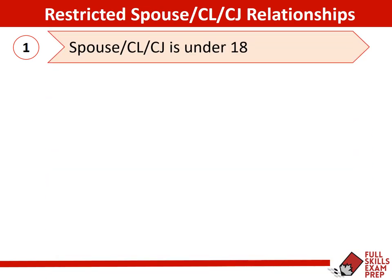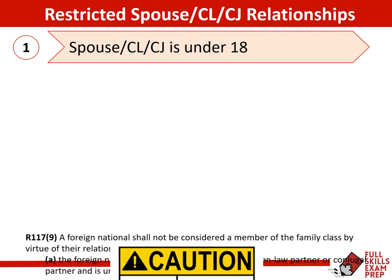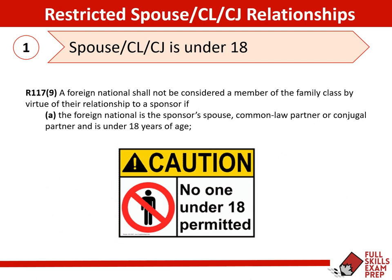Let's take a look at the age restriction in sponsoring a spouse, common law partner, or conjugal partner. Essentially it's really straightforward: if either party is under 18, they can't be sponsored. If the couple gets married at 17 and maybe one partner overseas is 17 years old and the partner in Canada is 20 or 22, that's fine except that they would have to wait until that spouse or partner overseas is 18.